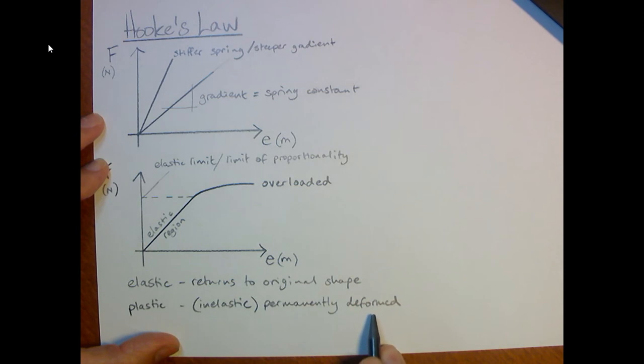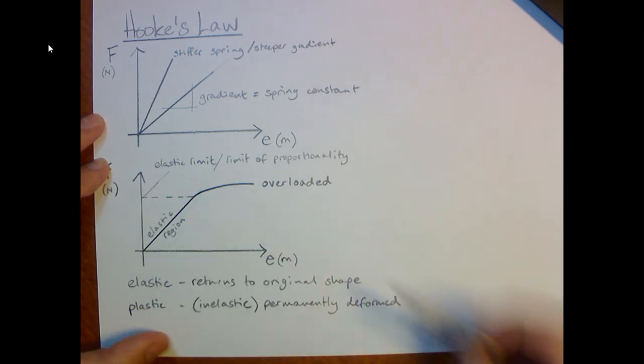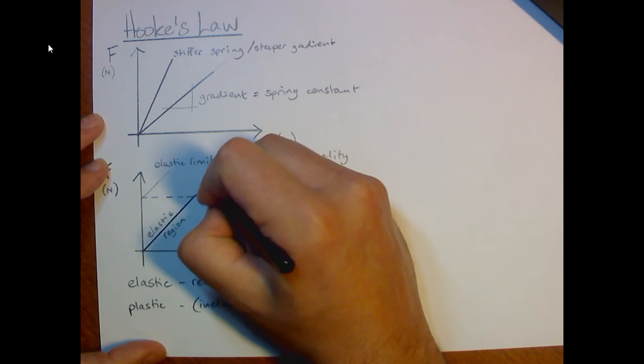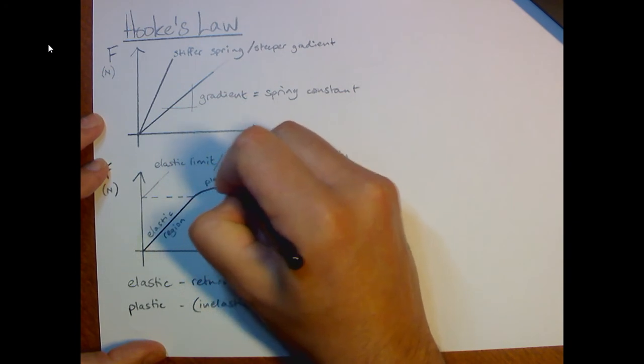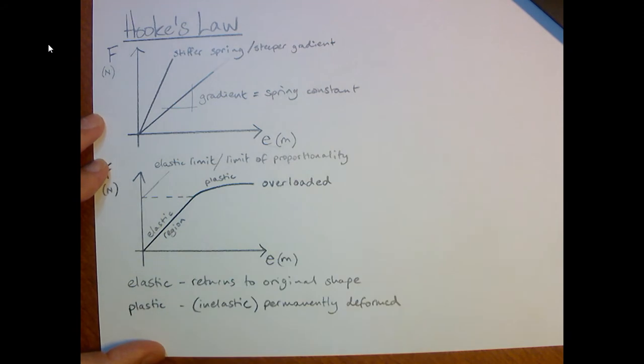Which means it's permanently out of shape. And that's what happens after the elastic limit. So this is plastic above the elastic limit and it's elastic below the elastic limit.